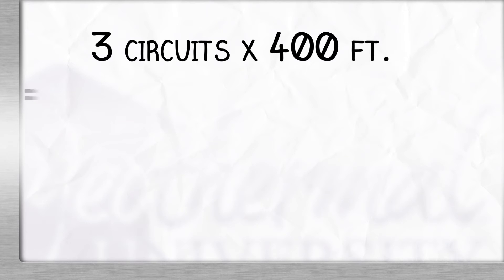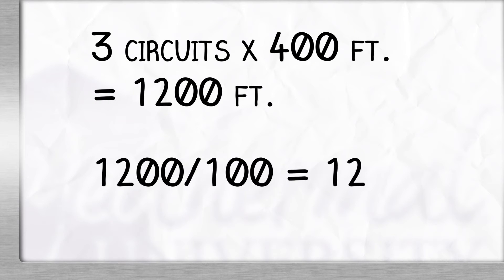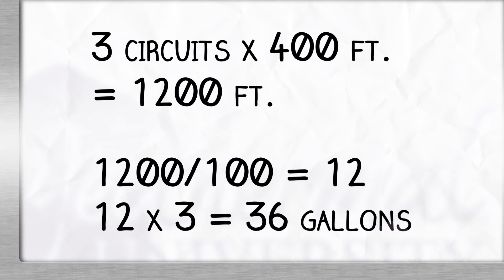So, our calculations are 3 circuits times 400 feet equals 1,200 feet. 1,200 divided by 100 equals 12. 12 times 3 gallons equals 36 gallons.